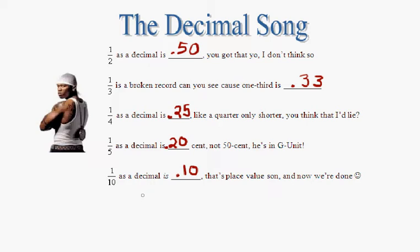So for example, if one fourth is .25, then you can figure out that something like three fourths is equal to, well that's one fourth, plus one fourth, plus one fourth. That's three fourths.